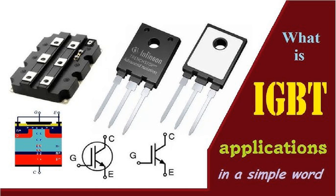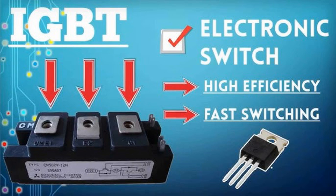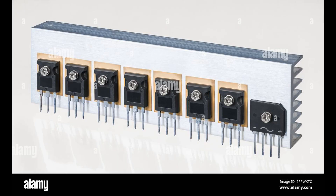On state — conduction mode: When a positive voltage above a certain threshold is applied to the gate terminal, an electric field is created across the thin insulating oxide layer between the gate and the semiconductor body. This electric field induces the formation of a conductive channel in the P-well region beneath the gate, allowing electrons to flow from the emitter into the N-drift region. At the same time, holes are injected from the P-plus substrate into the N-drift region, creating a large number of charge carriers in the drift region. The device operates in saturation mode, where significant current flows from the collector to the emitter, and the IGBT has a low on-state voltage drop due to the injection of charge carriers.